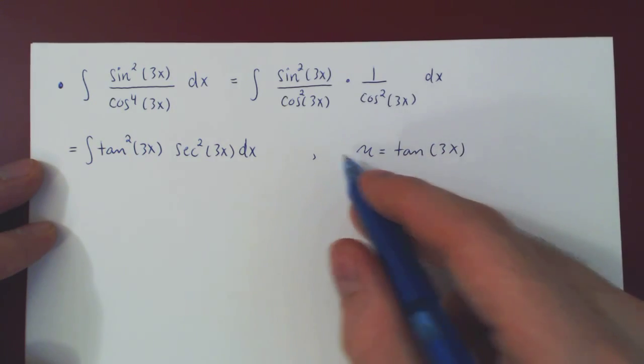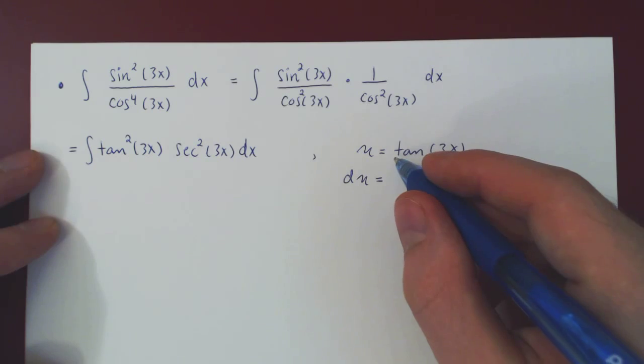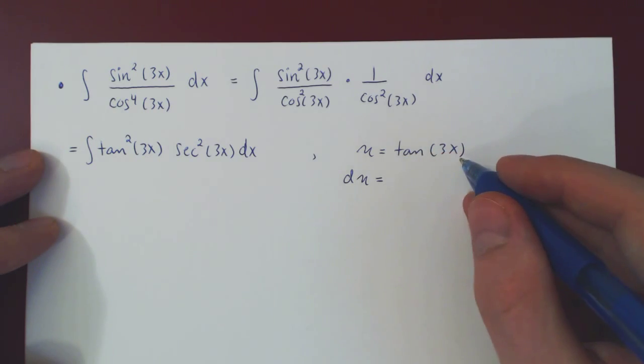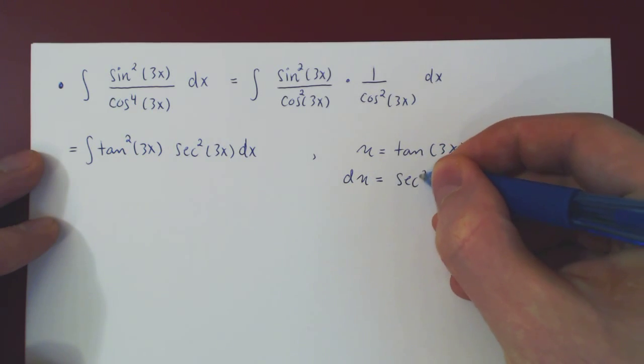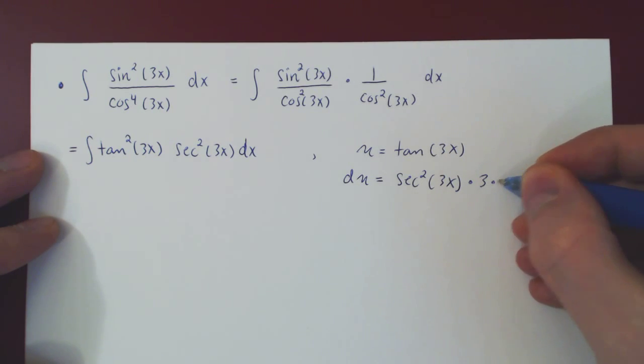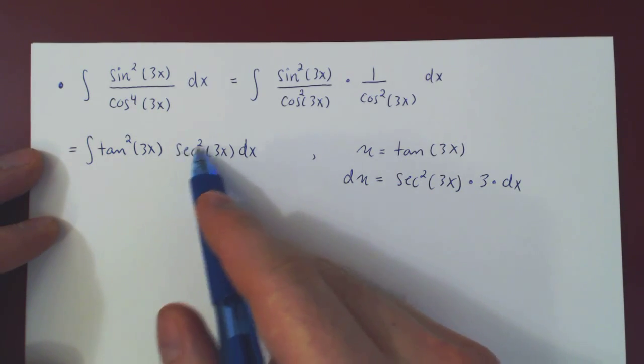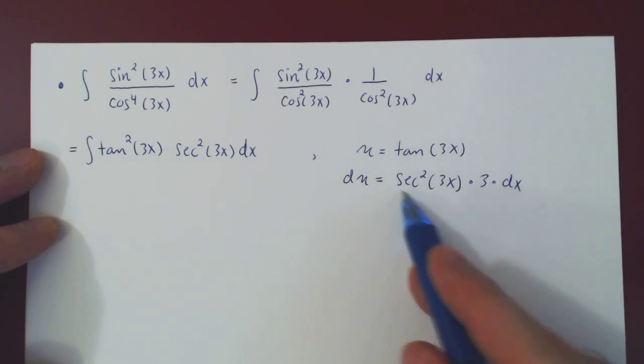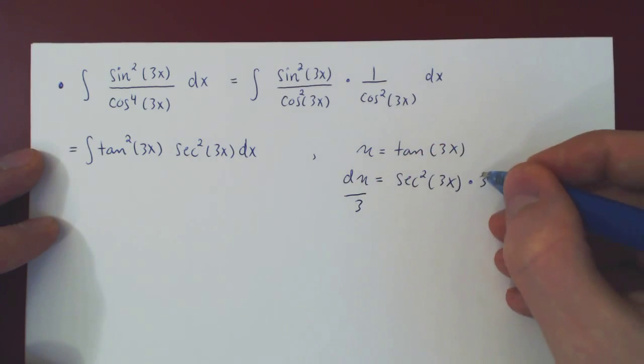Take on both sides the differential, and you obtain that du is, and once again here be careful to apply the chain rule, the derivative of tangent is secant squared of 3x, times the derivative of the argument, 3x, the derivative is, of course, 3, times dx. We wanted to solve for secant squared of 3x dx. Divide both sides by 3, and mission accomplished.